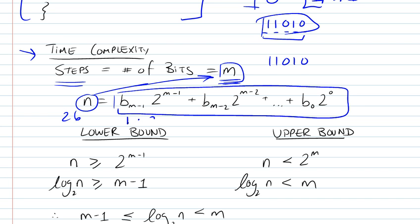So this would be 1 times 2 to the 4, right? 2 to the 0, 2 to the 1, 2 to the 2, 2 to the 3, and 2 to the 4 right here. And this would be 1 times 2 to the 3 and so on until you reach the end where it's 0 times 2 to the 0. So this would be a representation.